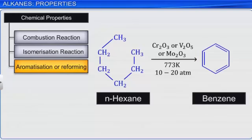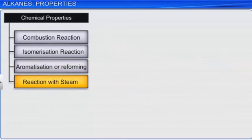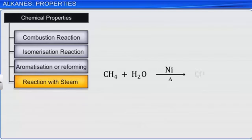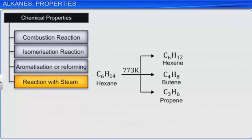Alkanes also react with steam. This reaction is used in the industrial preparation of dihydrogen gas. For this, methane is heated at 1000°C in the presence of nickel along with steam to form carbon monoxide and dihydrogen gas. Higher alkanes, at higher temperatures, decompose to form lower alkanes and alkenes, amongst others. This reaction is also known as pyrolysis.